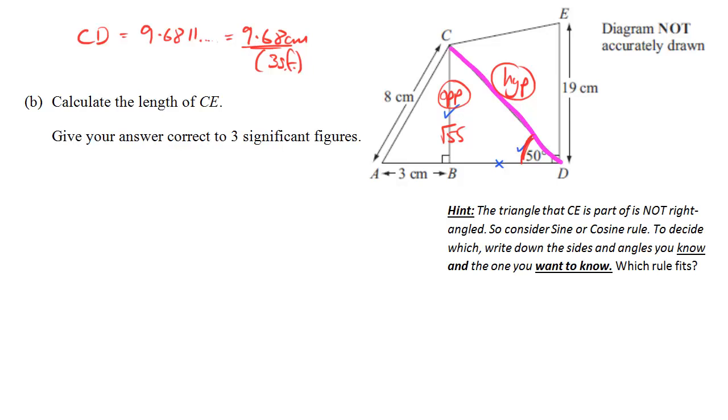Right. Next part. We want to calculate the length of CE. So this length here. Now, the hint that's given here is that we should notice straight away that CE is part of a triangle which is not right angled. So we can't use sine, cos or tan in the normal way, but we can use the sine or cosine rule. And the best way to decide which of these to use is always to write down the sides or angles that you know and the one that you want to know.